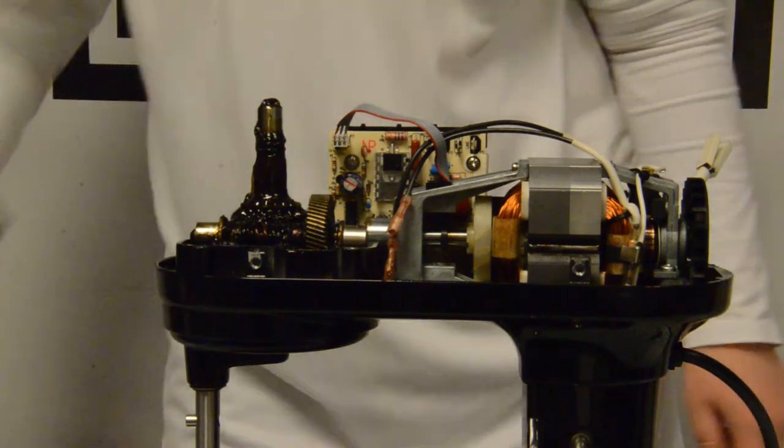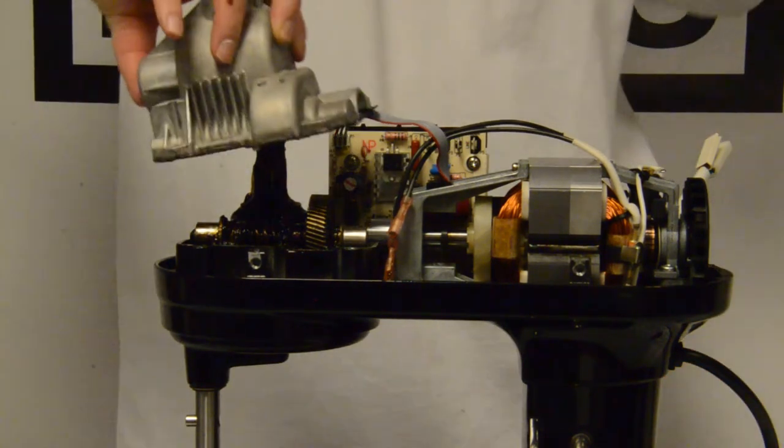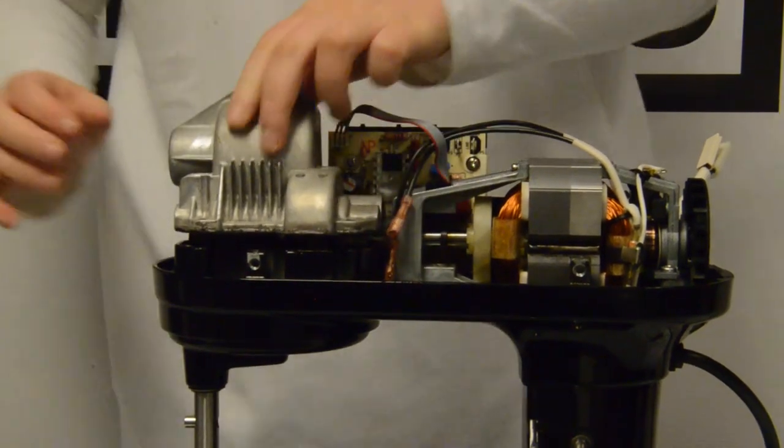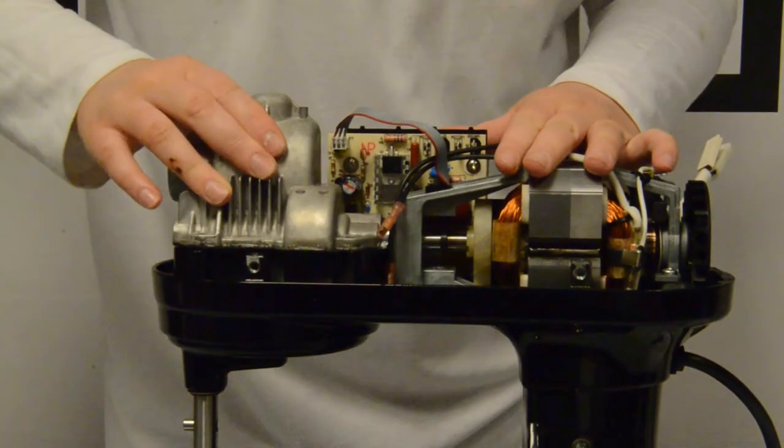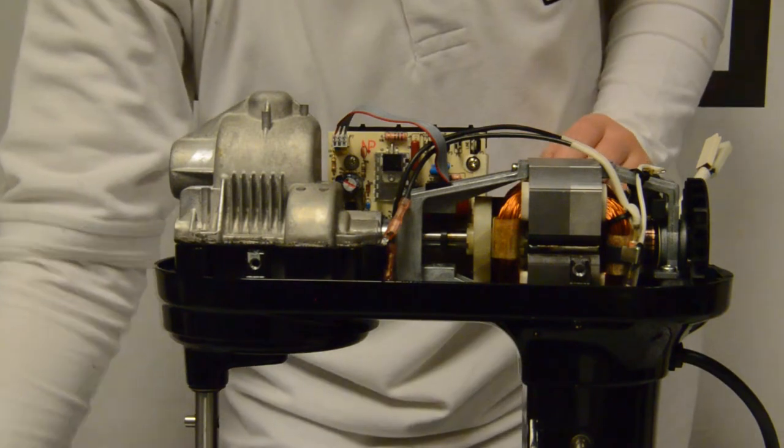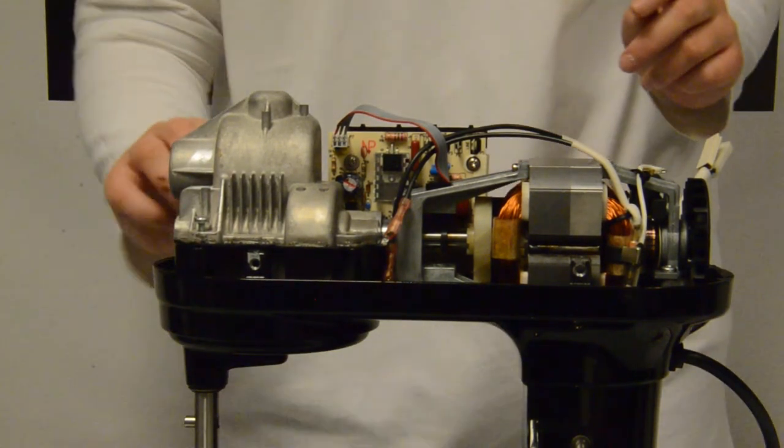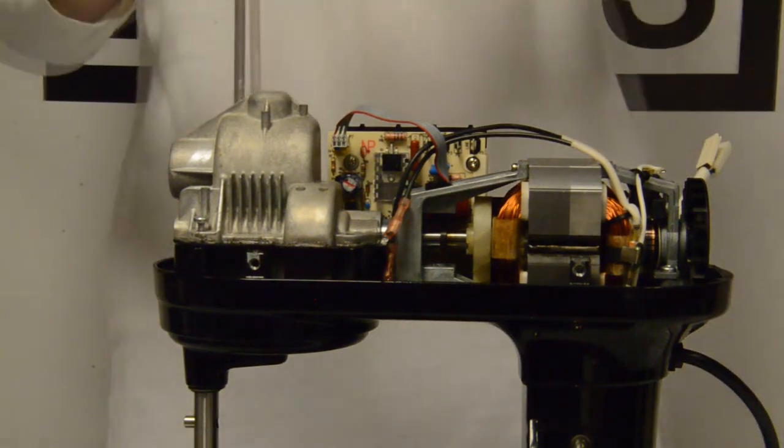Put the gear case back on top of the worm gear, bevel pin, and shaft. Tighten with two screws on the front. You will put the back screws in later.